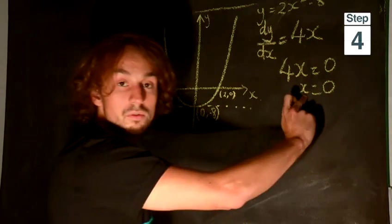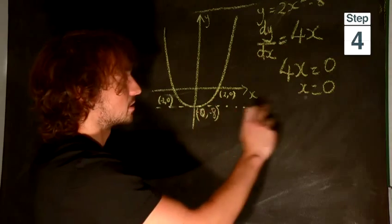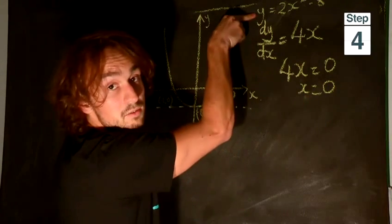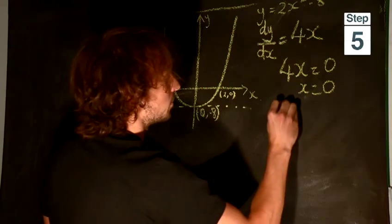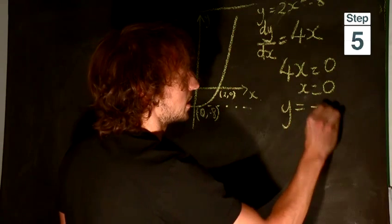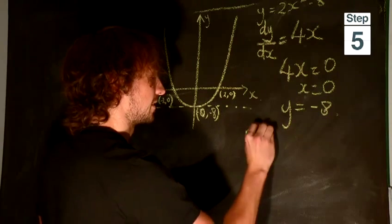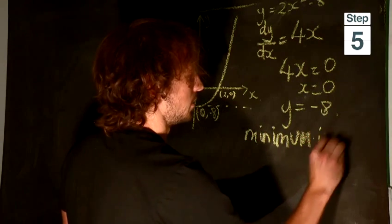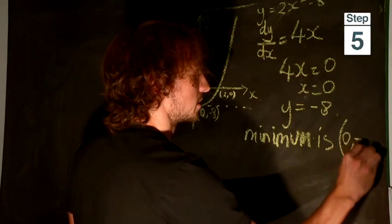Now we know the x-coordinate of where the minimum lies. So what do we do to find the y-coordinate? We put this x right back into the original equation to find that y is equal to minus 8. So the minimum point is 0, minus 8.